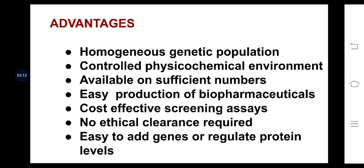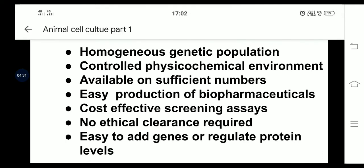No ethical clearance is required — if you are using living organisms like monkeys or chimpanzees, we need ethical clearance, but for animal cell culture we do not. Easy to manipulate the genes — we can add genes of our interest or delete genes which are not significant, and regulate the protein levels.